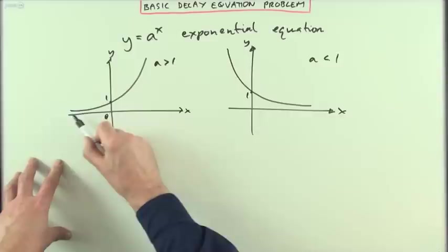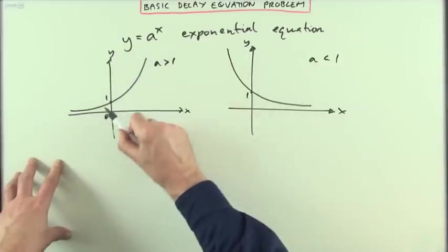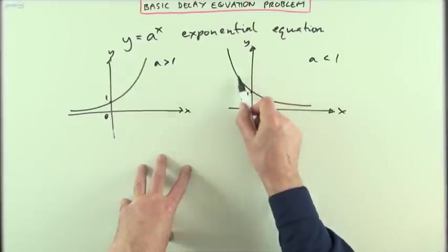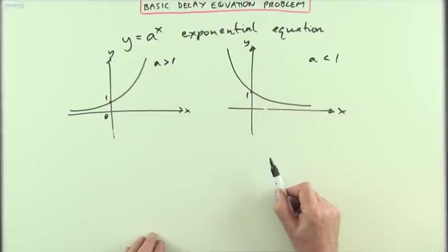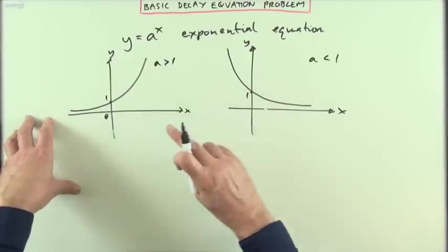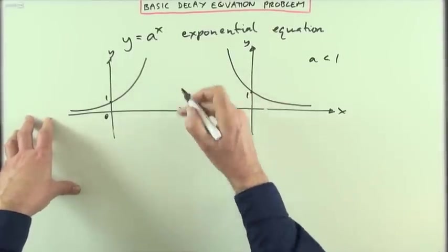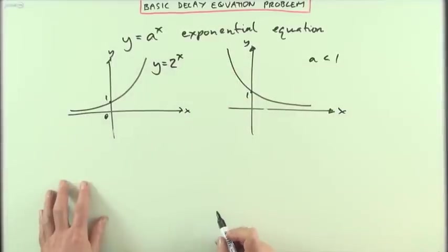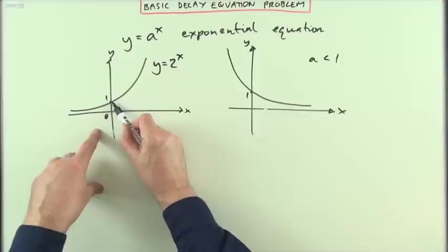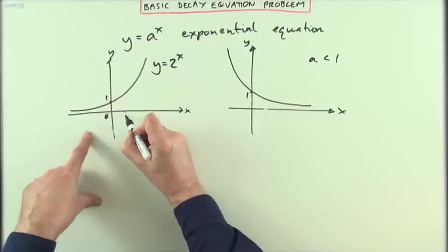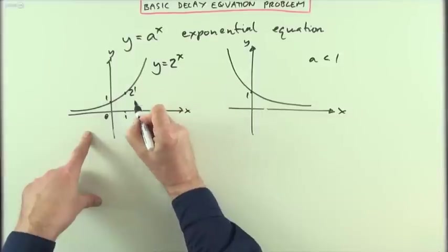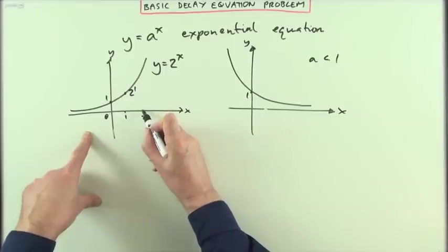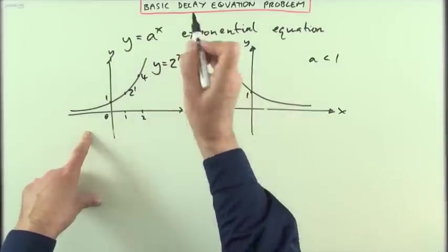This exponential equation would represent something growing exponentially. This would represent something decaying exponentially. Putting a couple numerical examples, that could be y equals something like 2 to the power x. So it would start at 1, then when x is 1, the answer would be 2 to the power 1, which is 2. When x is 2, the answer would be 2 to the power 2, which is 4, and so on.